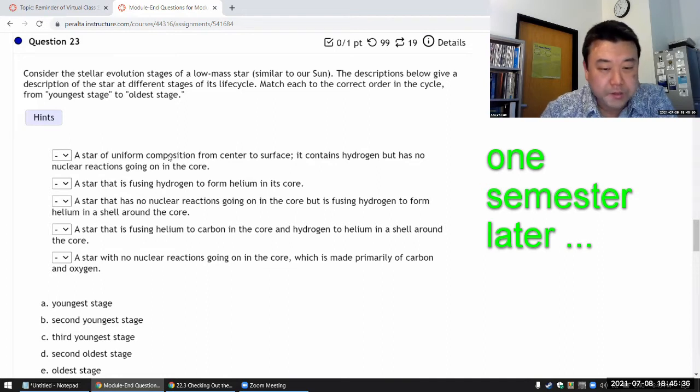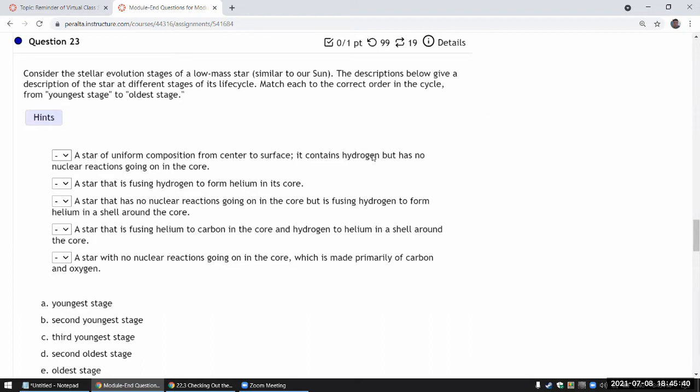Start off uniform composition from center to surface. It contains hydrogen but has no nuclear reaction going on in the core. That feels like that's describing a protostar because no nuclear reactions in the core. So protostar might be the youngest. So let me just work this as A.